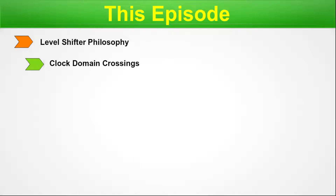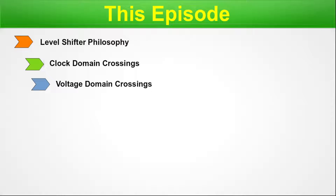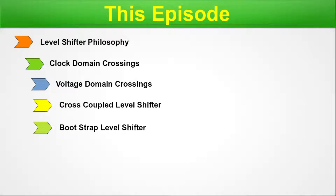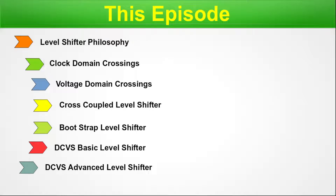Next, we will briefly explain the clock domain crossings. Next, we will briefly explain the voltage domain crossings. Then we will start our discussion on advanced level shifters by talking about the cross-coupled level shifter, followed by the bootstrap level shifter, the DCVS basic level shifter, and the DCVS advanced level shifter. Finally, we will summarize our entire discussion.